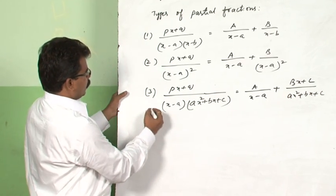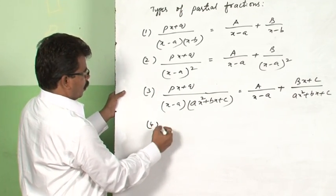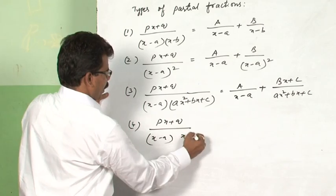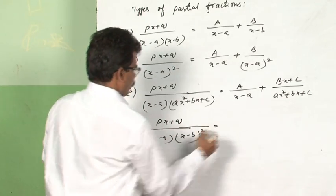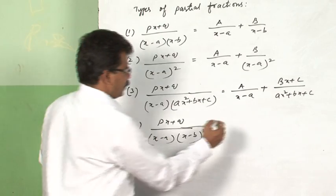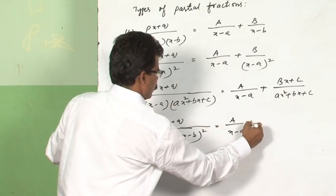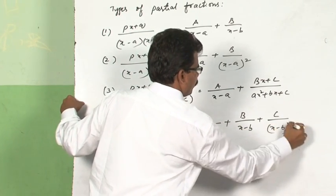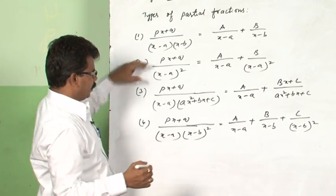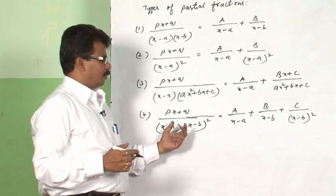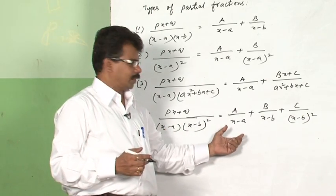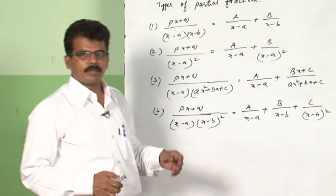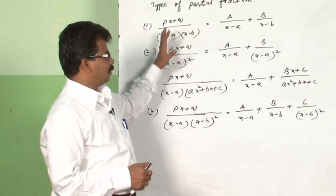Now let us combine types one and two. In that situation we may get an integrand of the form (px + q) divided by (x − a)(x − b)². We write the partial fractions as A/(x − a) plus B/(x − b) plus C/(x − b)². This type of integrand can be resolved into partial fractions in this way. We will now be solving problems based on all these partial fraction types.